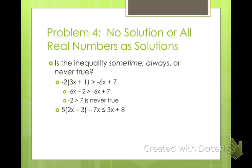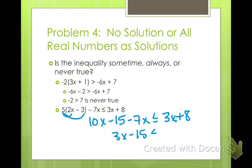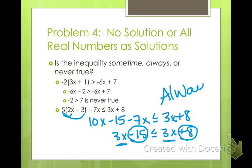What about this one? So I have 10X minus 15 minus 7X is less than or equal to 3X plus 8. Combine like terms, I get 3X minus 15 is less than or equal to 3X plus 8. Can you see how we're starting with the same number, no matter what number we pick? If we subtract 15, is that always going to be less than when we add 8? Absolutely. So this would be always true.